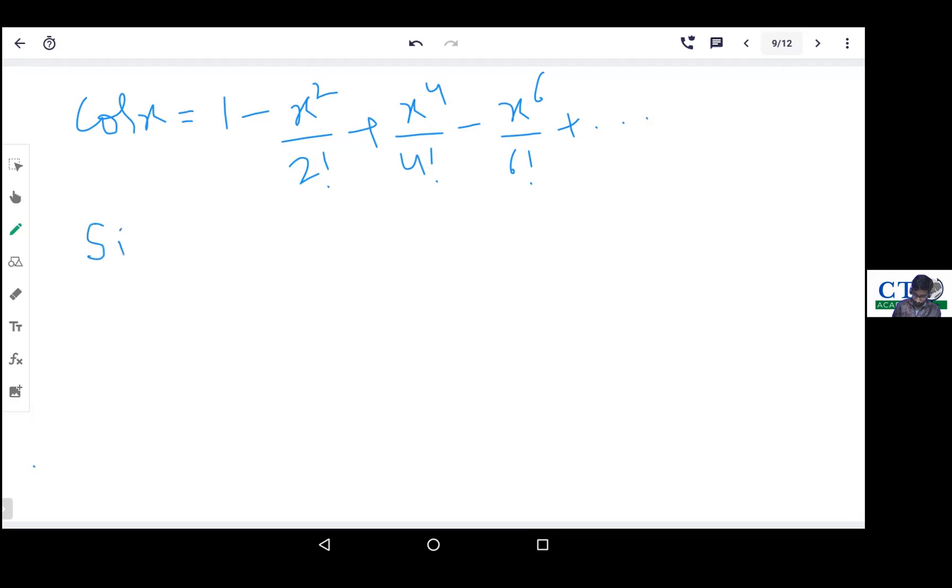Sin(x) expansion: x minus x cube upon 3 factorial plus x to the power 5 upon 5 factorial minus x to the power 7 upon 7 factorial, and so on to infinity. Sin(x) has odd powers throughout with alternating plus and minus signs. This is also important.